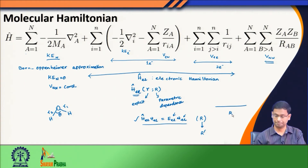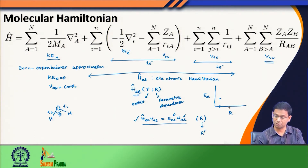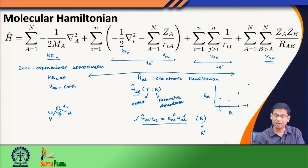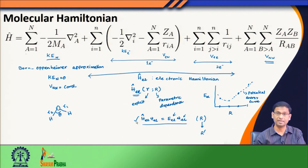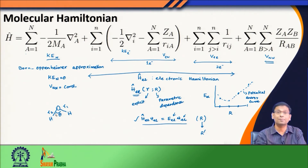In other words, if I change my R — the nuclear configuration — and look for the electronic energy for different values of R, I would get, for example: starting with one R I got this energy, taking another configuration I got another energy, and so on. So I am getting different energies because at each value of R I am solving the electronic part of the problem. When I connect them, what I get is called the potential energy curve.